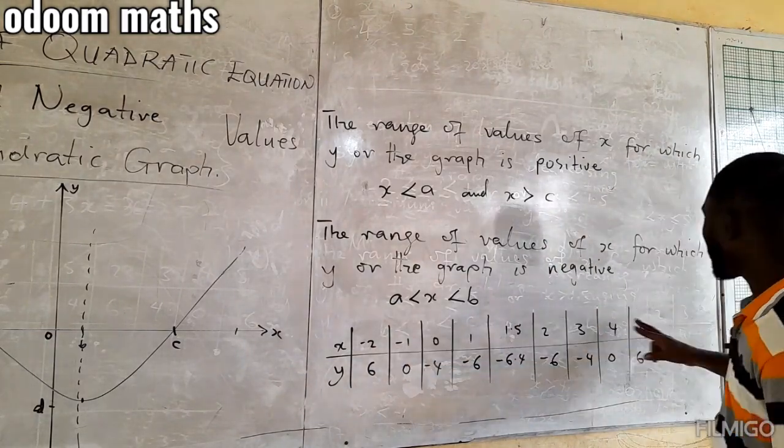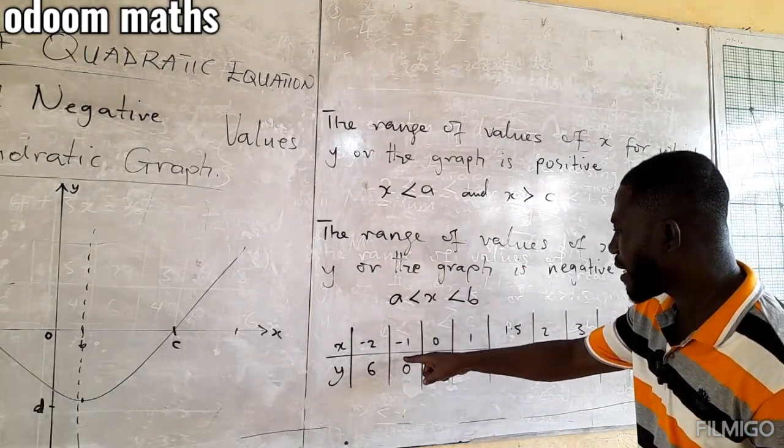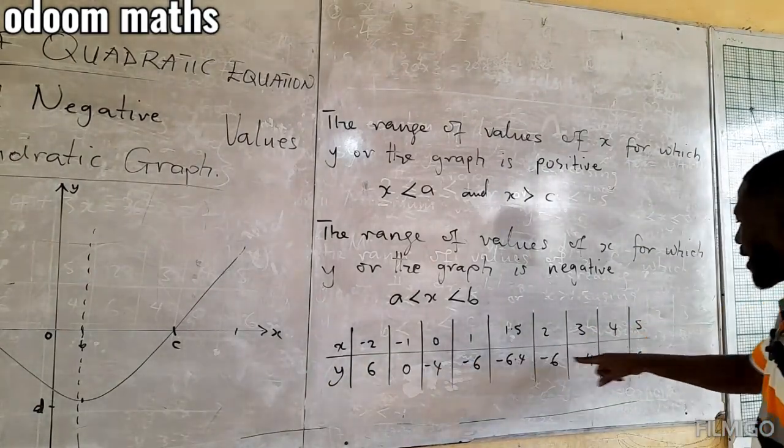Then, for negative, from negative 1 to 4, we also make the y values to be negative.